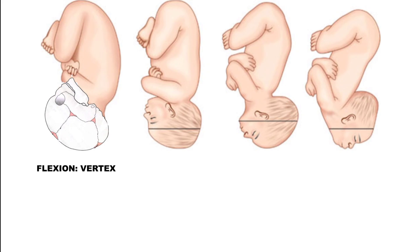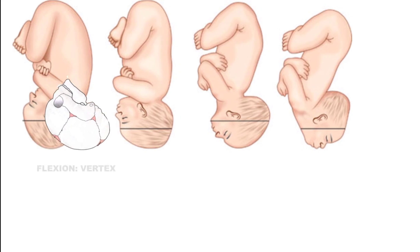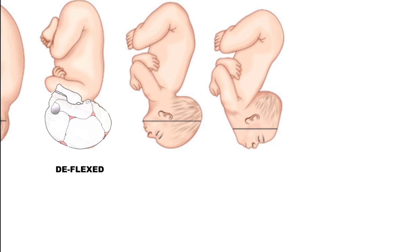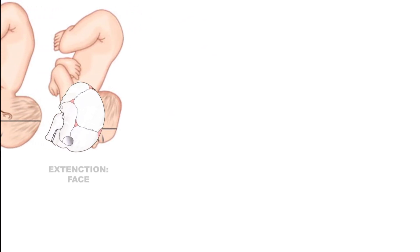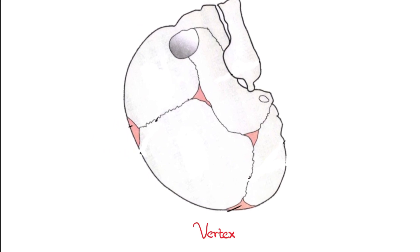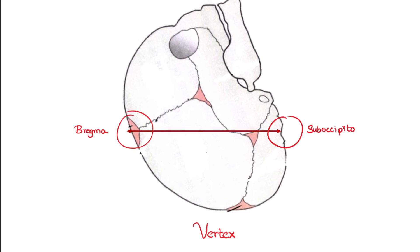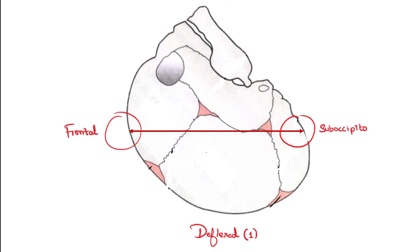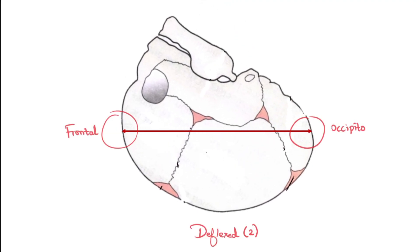We will learn the anteroposterior diameters from complete flexion of head to full extension, so remember this order: flexed, deflexed, brow, and face presentation. Starting from complete flexion, this is vertex presentation. The diameter here is suboccipitobregmatic. Next, deflexed presentation, which has two variations: one is suboccipitofrontal and occipitofrontal.